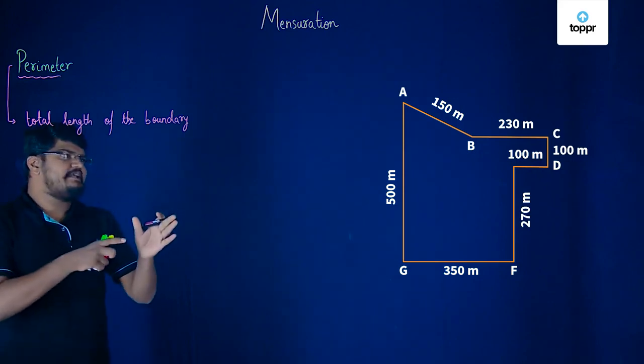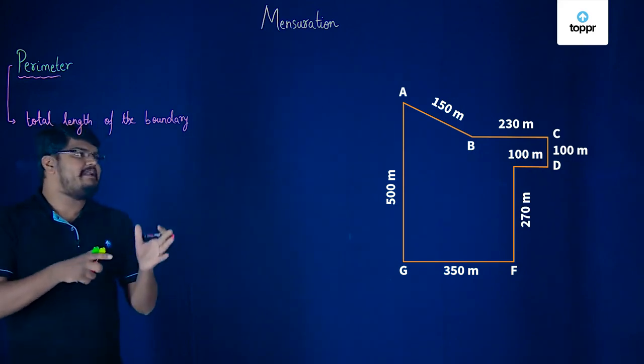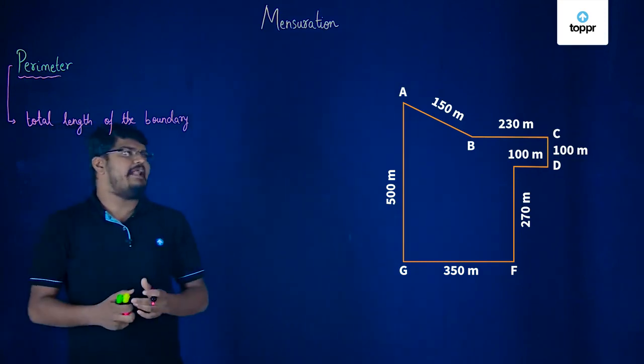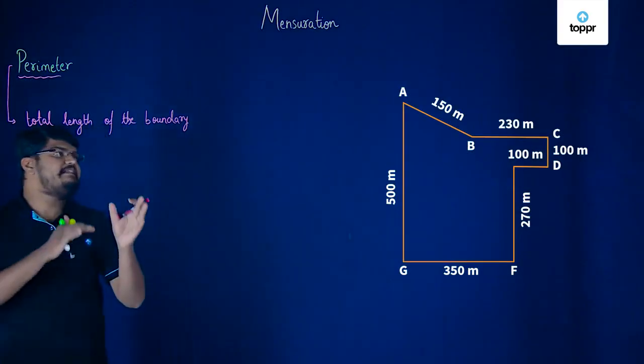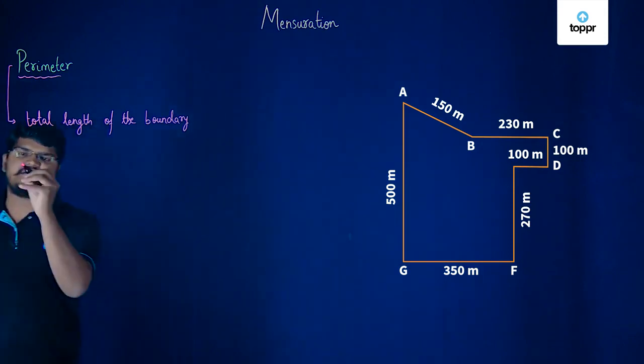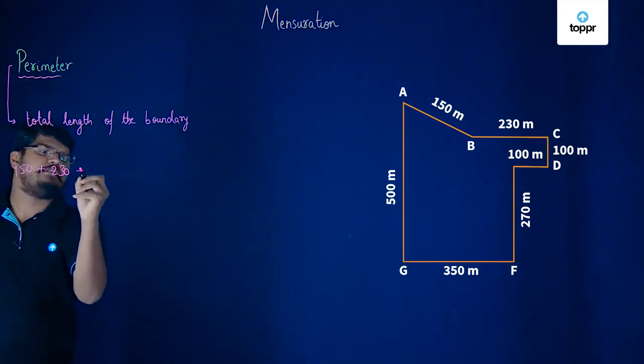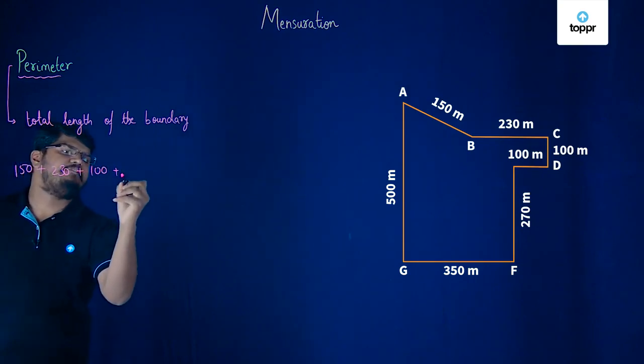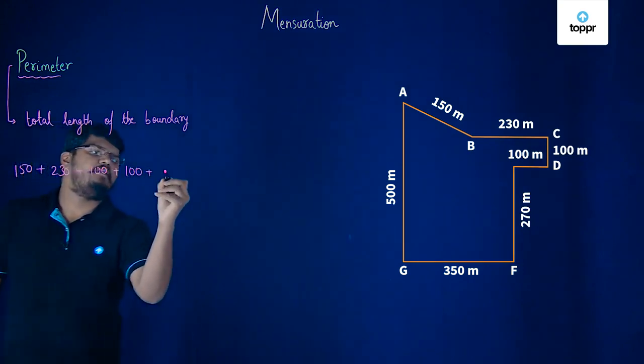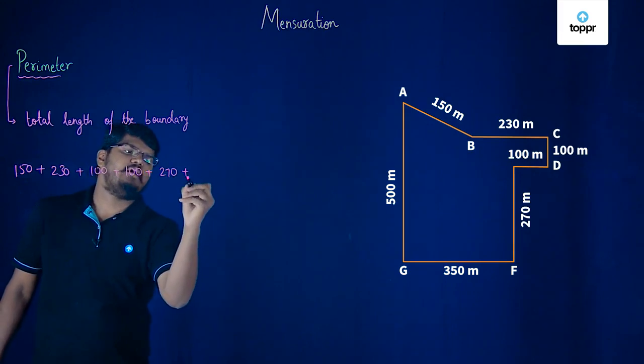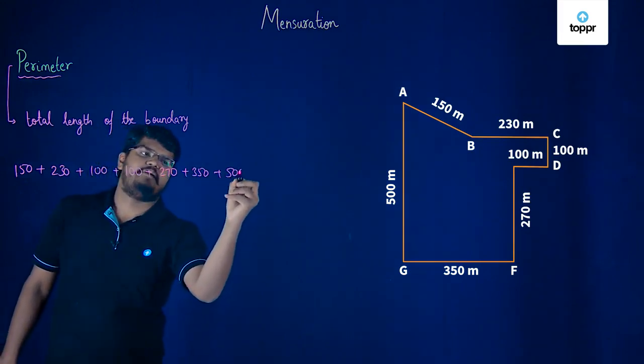So, using this, we can find out what actual distance I'd run for. Let us now calculate. You could see that the lengths which are given here start from 150, then we have 230, then we have 100, then we have another 100, a 270, a 350 and a 500.